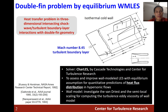We study the heat transfer problem in three-dimensional intersecting shockwave-turbulent boundary layer interactions with double-fan geometry. The Mach number is 8.45 with a fully turbulent boundary layer. The wall is isothermal and cold with respect to the free stream total temperature. We deploy the TASK software developed by Cascade Technologies. We aim to assess and improve wall-modeled LES with equilibrium assumptions for quantitative predictions of heat flux distributions in hypersonic flows. We also investigate the van Driest and semi-local scaling for computing the turbulence eddy viscosity in the wall model.